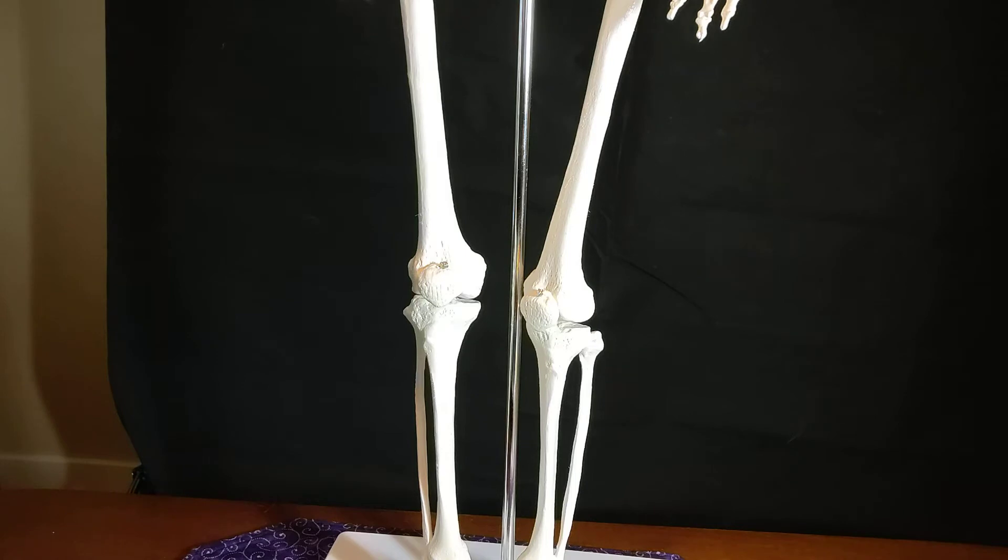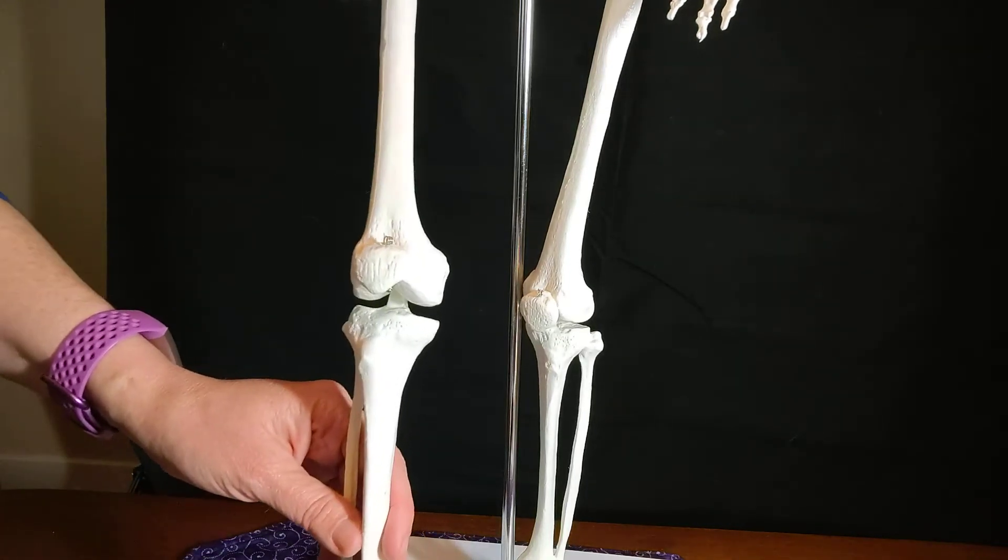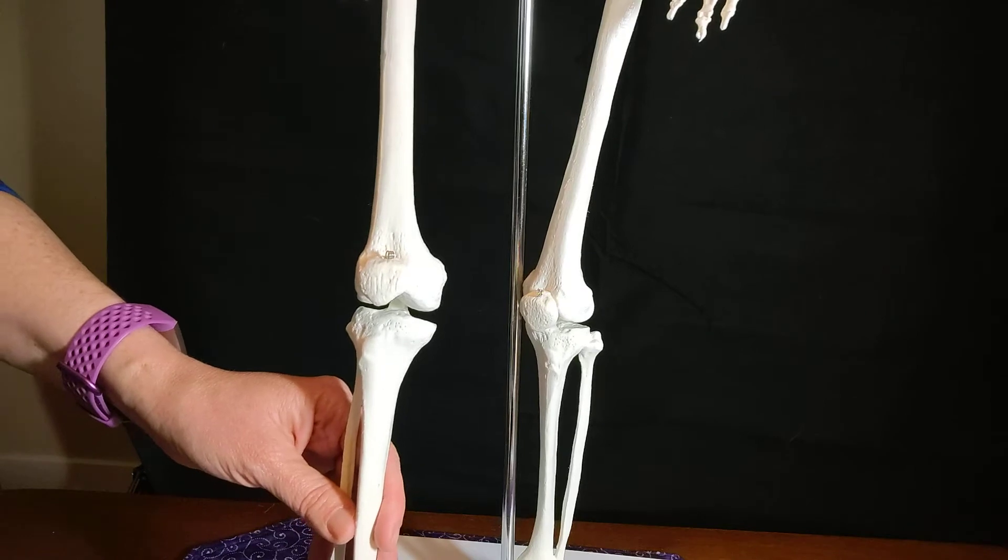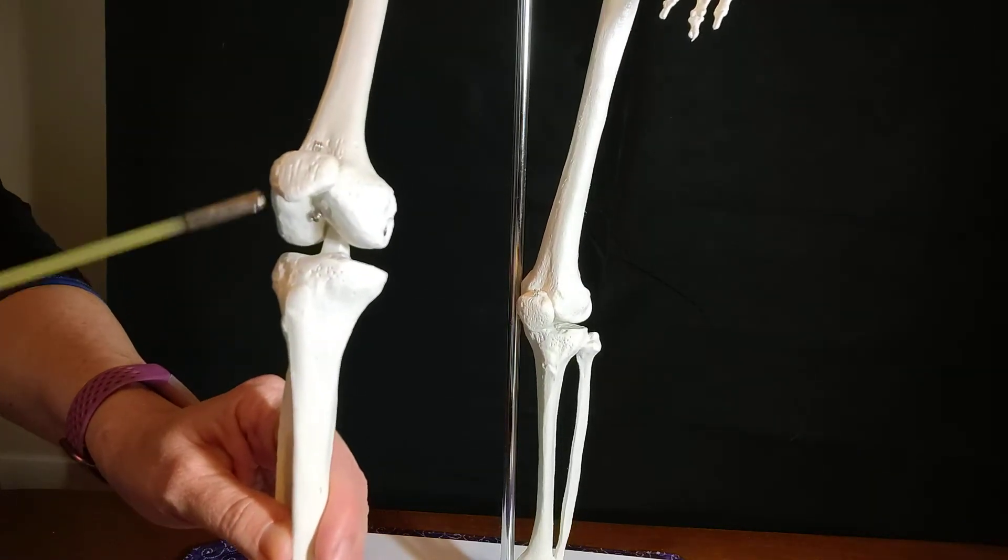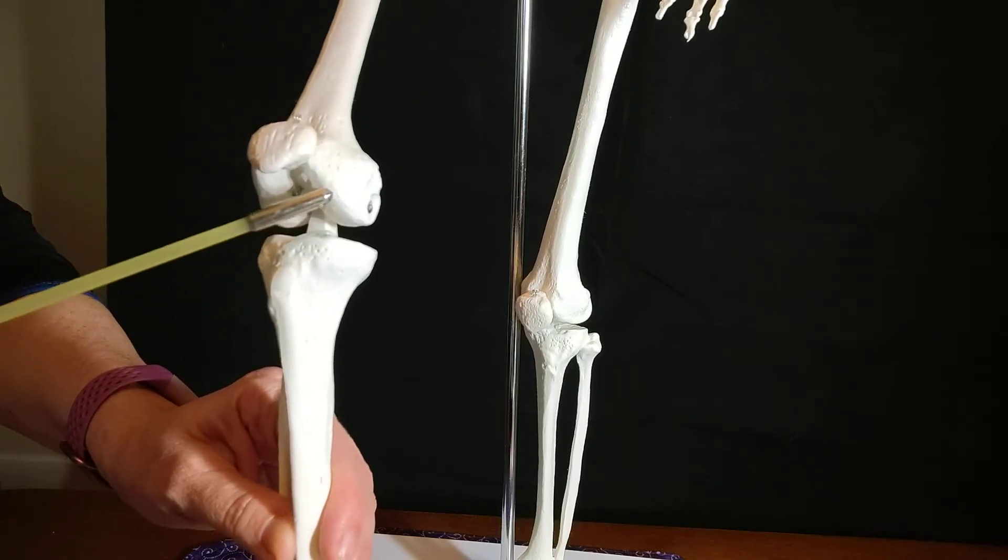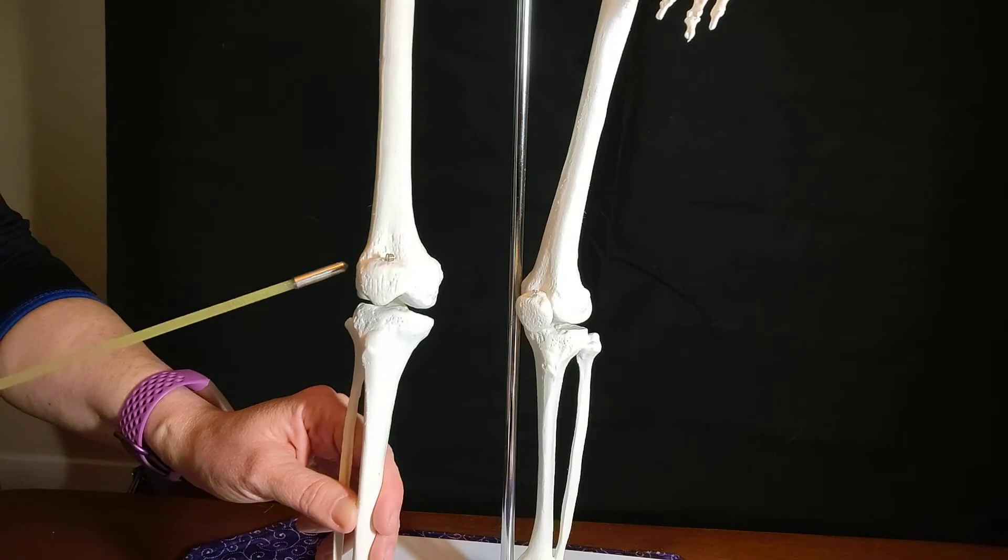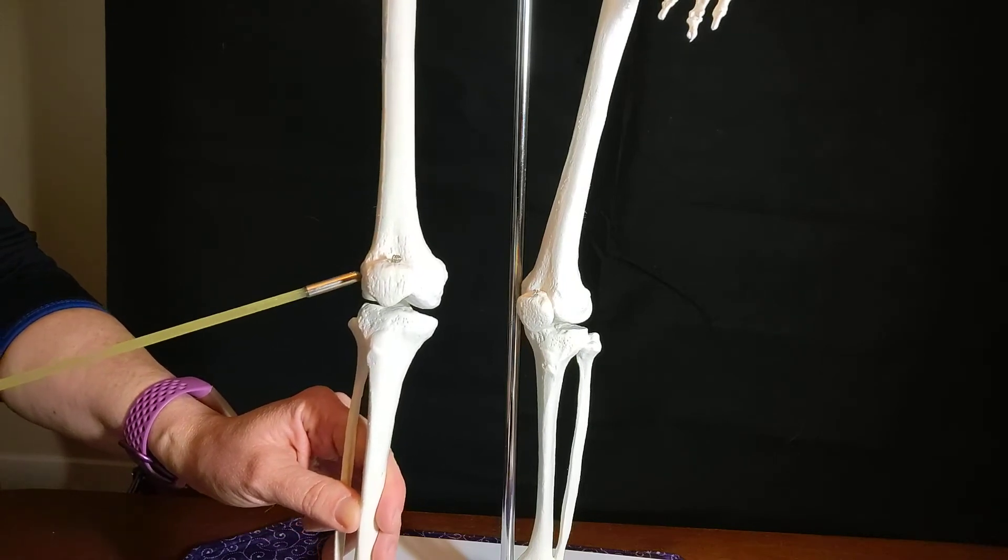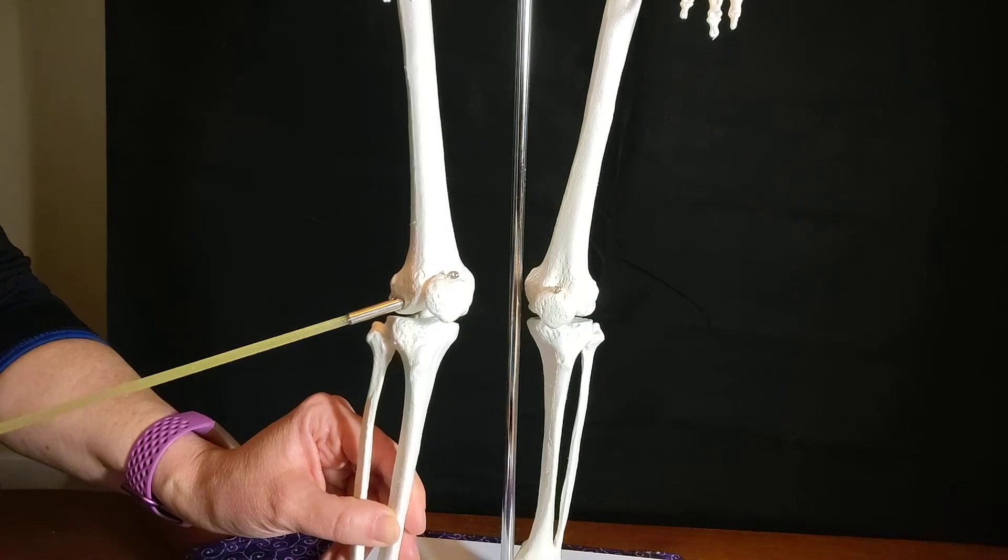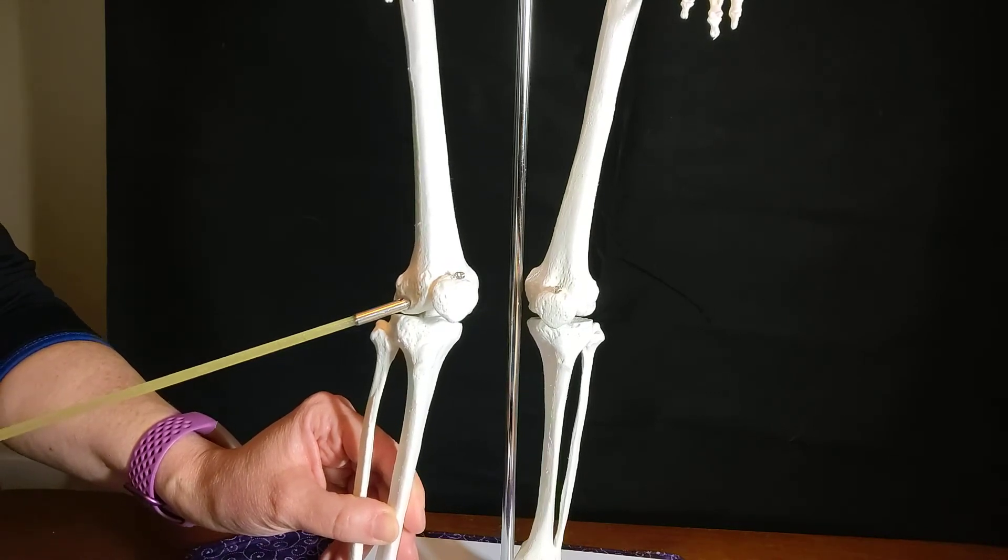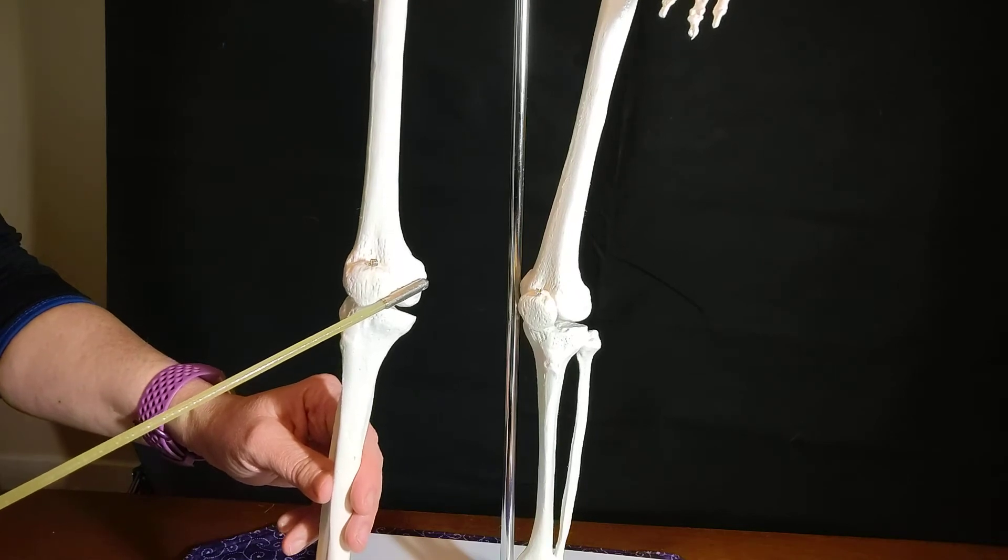So the medial and lateral epicondyles can be palpated. The condyles can be palpated at the anterior portion of the knee, but they're the articulating surface of the knee. So the epicondyles are just above the condyles. The lateral epicondyle is, strangely enough, on the lateral side of the femur. The medial epicondyle is on the medial side of femur.